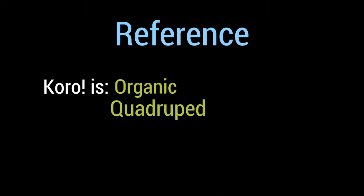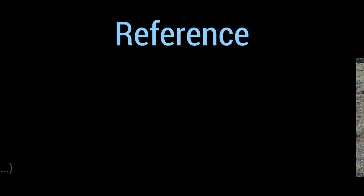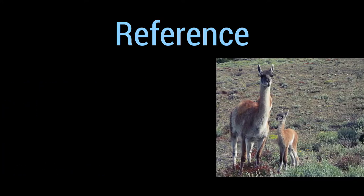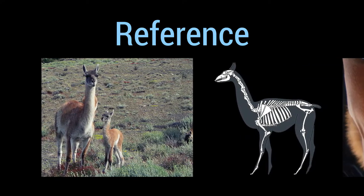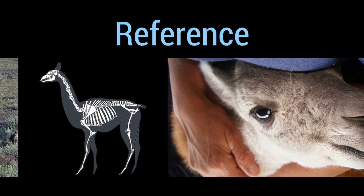Koro is an organic quadruped — real, and that's important — and a camelid, so it has a family of other animals close to it. When I was looking for reference for Koro, I liked this character because he lives in Patagonia, where I'm from, in the south of South America, so I had a lot of reference available.